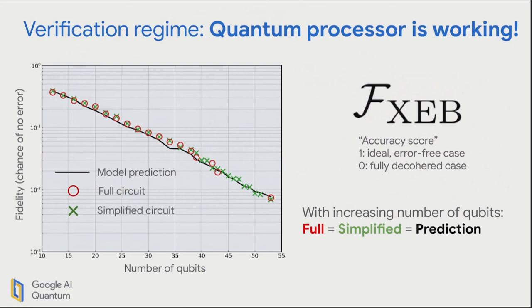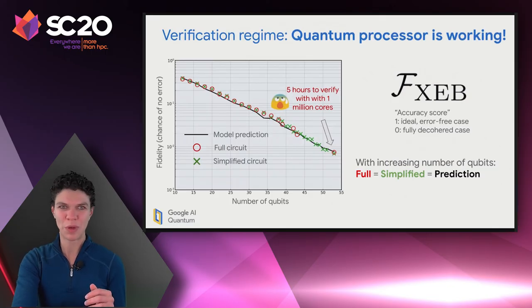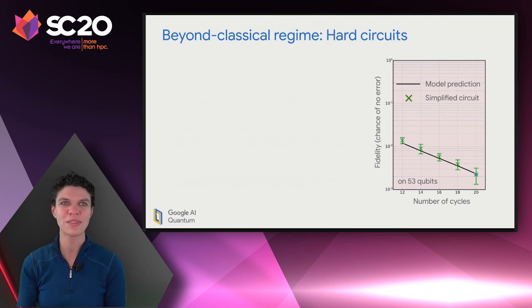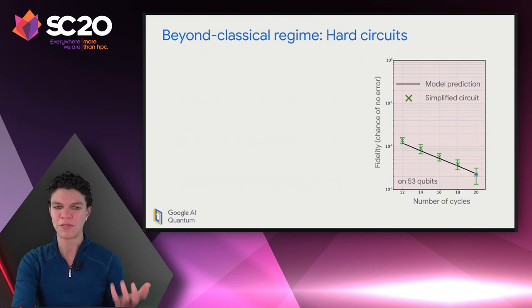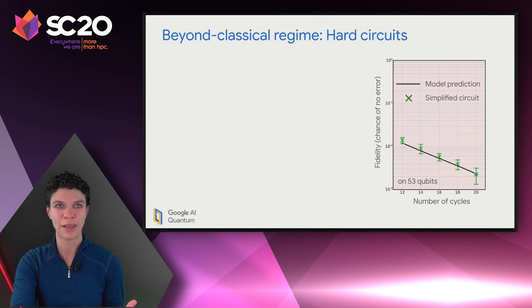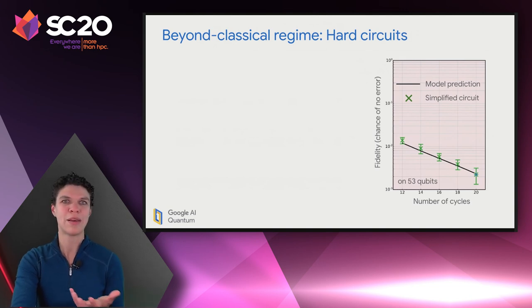The full circuits become sparse at high qubit values — this one last little red dot would take five hours to verify for a machine with one million cores. So it's already getting computationally intensive. We push a bit further into the beyond-classical regime — we still run our full circuits, but at this point there is no way for us to verify with a classical computer that the quantum computer is doing what it's supposed to. We do see that the simplified circuits and the model continue to agree fantastically. We've recorded the data that the quantum computer took so that hopefully someday with more capable classical processing we'll be able to go back and verify.